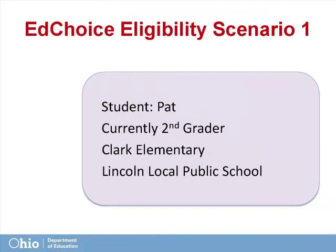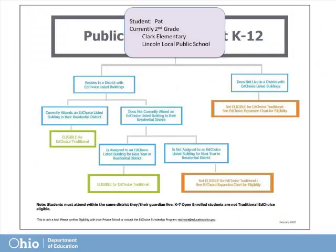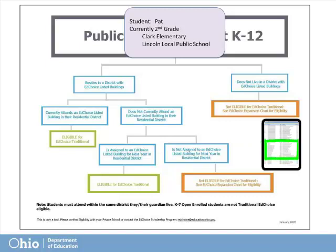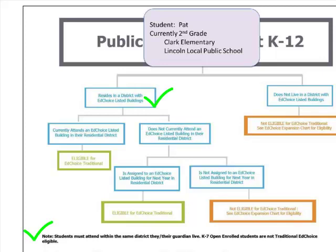Let's begin. In our first example, we have a student named Pat, a 2nd grade student at Clark Elementary in Lincoln Local Public School District in Franklin County. We must review the current public school student K-12 flowchart, then determine if Lincoln Local Public School District has any buildings on the EdChoice eligible list. We verify that Lincoln Local does have buildings on the list and that Clark Elementary is also on that list. After verifying that Pat is a resident of the district and attending an EdChoice eligible listed building, we can be confident that Pat is traditional EdChoice eligible.